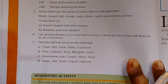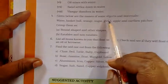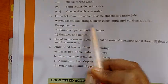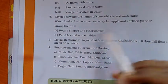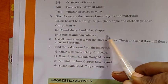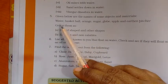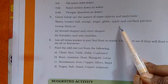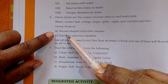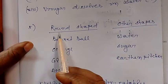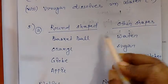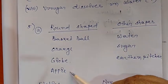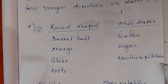Next, question number 5. Given below are the names of some objects and materials. We have to group them. Group A is round set and other set. Materials are: water, basketball, orange, sugar, glue, apple, and the pitcher. Round set: basketball, orange, glue, and apple. Other set: water, sugar, and the pitcher.